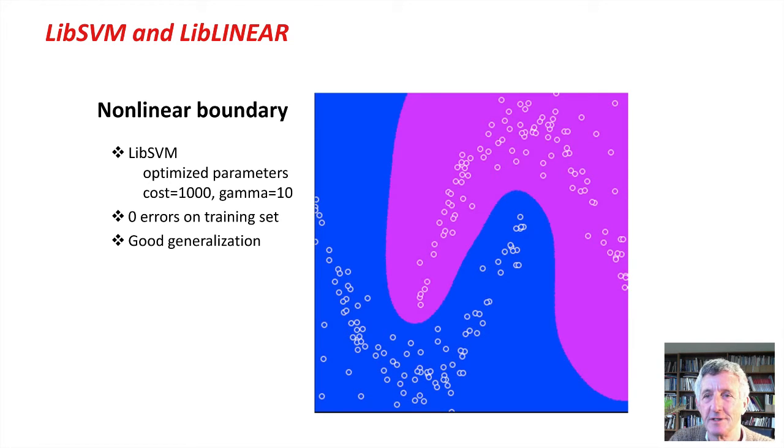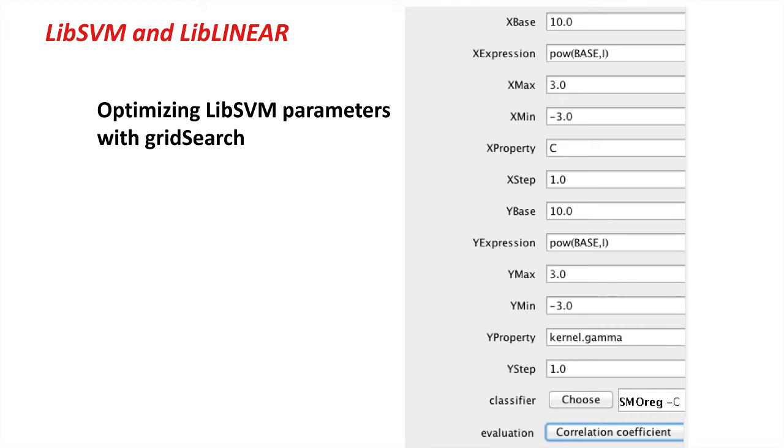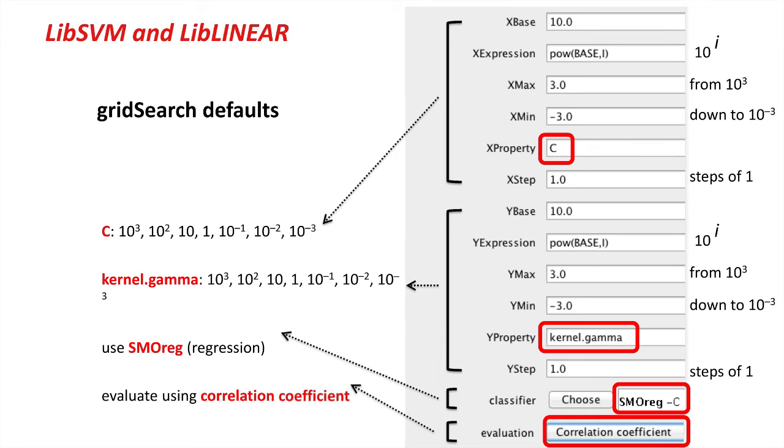Whenever you use nonlinear support vector machines, you need to optimize the parameters. The parameters we're talking about are called cost and gamma. When we optimize parameters in Weka, we use the grid search method, which is in the meta category. This is the parameters for grid search. The default configuration for grid search, well, let's look at it. Down at the bottom, it says use SMOreg, that's the default, and evaluate using the correlation coefficient. We're going to need to change those.